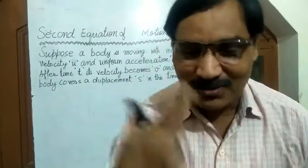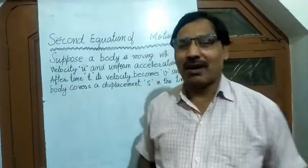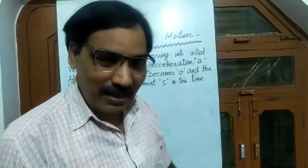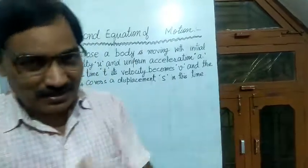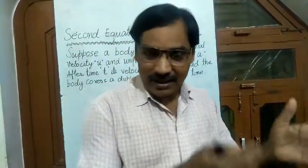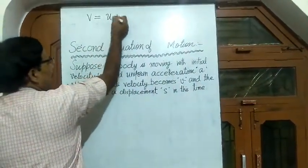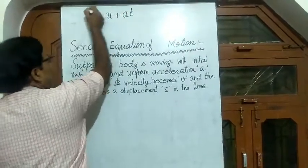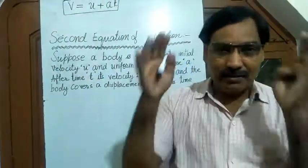Hello, Vattu! How are you? In the last video, what did we learn? We have studied the first equation of motion. Do you remember? Yes, it was the relation between initial velocity, final velocity, acceleration, and time. And the equation is V is equal to U plus AT. This is known as the first equation of motion. We have studied it in the first video.